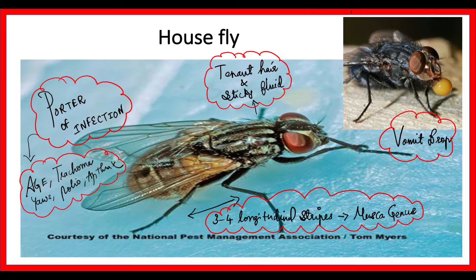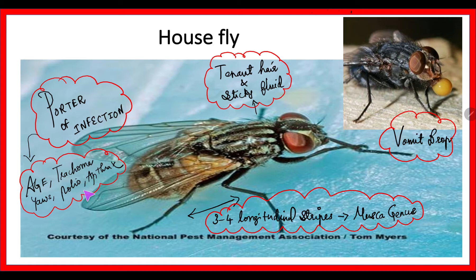House fly — a quick recap. House fly is also known as the 'porter of infection.' It has tenant hair with which it can secrete a sticky fluid and stick onto one place, and it can also transmit diseases. The vomit drop is basically when it vomits solid food and then sucks it back. It belongs to the genus Musca. It has 3 to 4 longitudinal stripes in the thorax as the identification feature of Musca genus. Diseases transmitted include acute gastroenteritis, trachoma, yaws, polio, anthrax, and others.